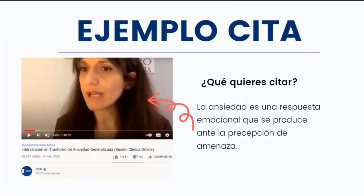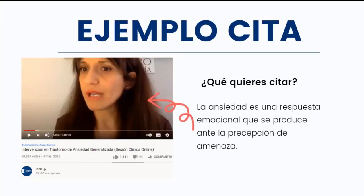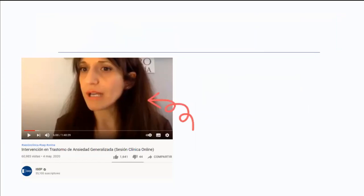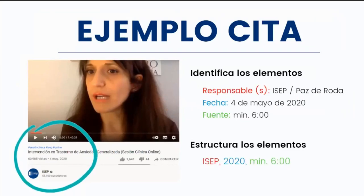Aquí vamos a empezar con ejemplos. Este es el ejemplo de cómo vamos a citar y referenciar un video. Yo consulté este video donde dice que 'la ansiedad es una respuesta emocional que se produce ante la percepción de amenaza.' Cuando ya sé qué es lo que quiero citar, lo primero que hay que hacer es identificar qué exactamente quiero transcribir o utilizar para mi trabajo. Una vez identificado, voy a resaltar primero mis elementos. Para la cita necesitamos responsable, fecha y fuente, es decir, rojo, azul y verde.